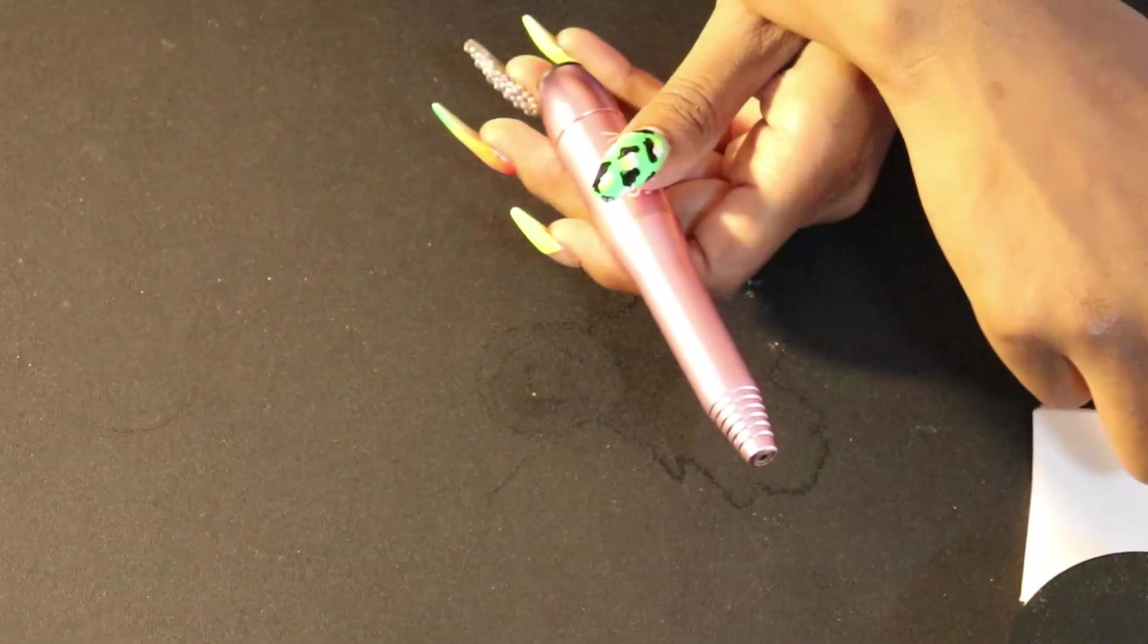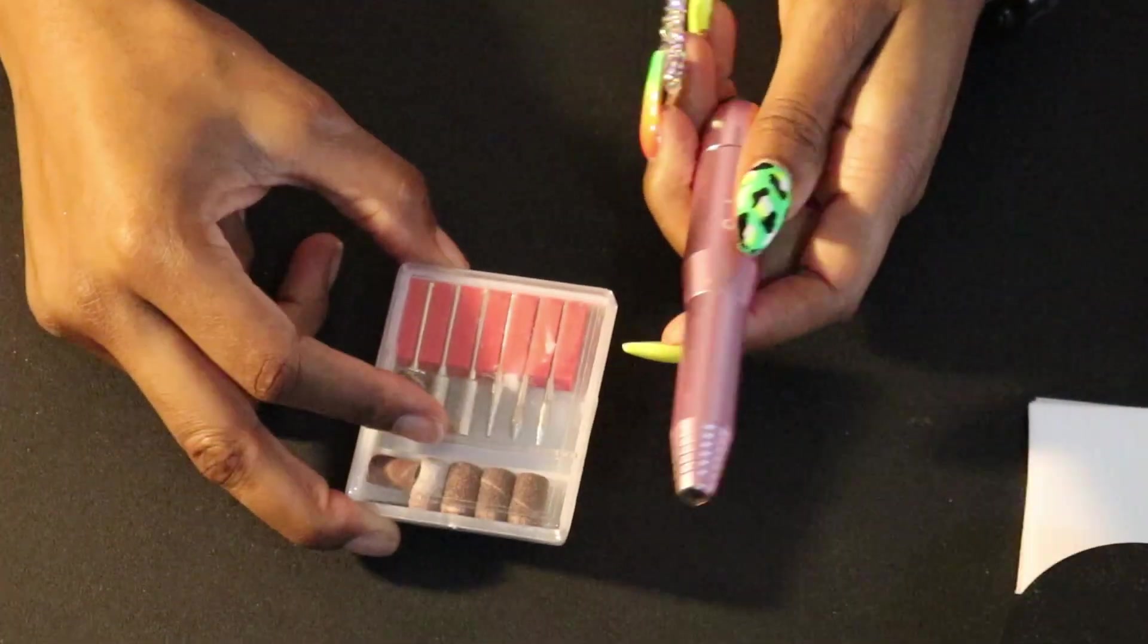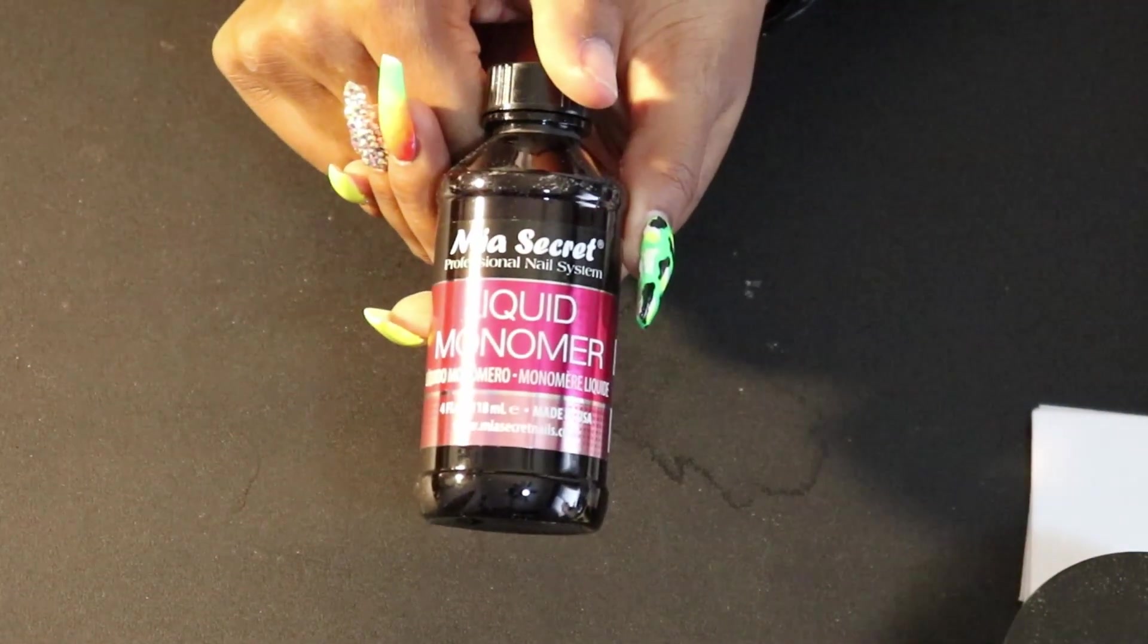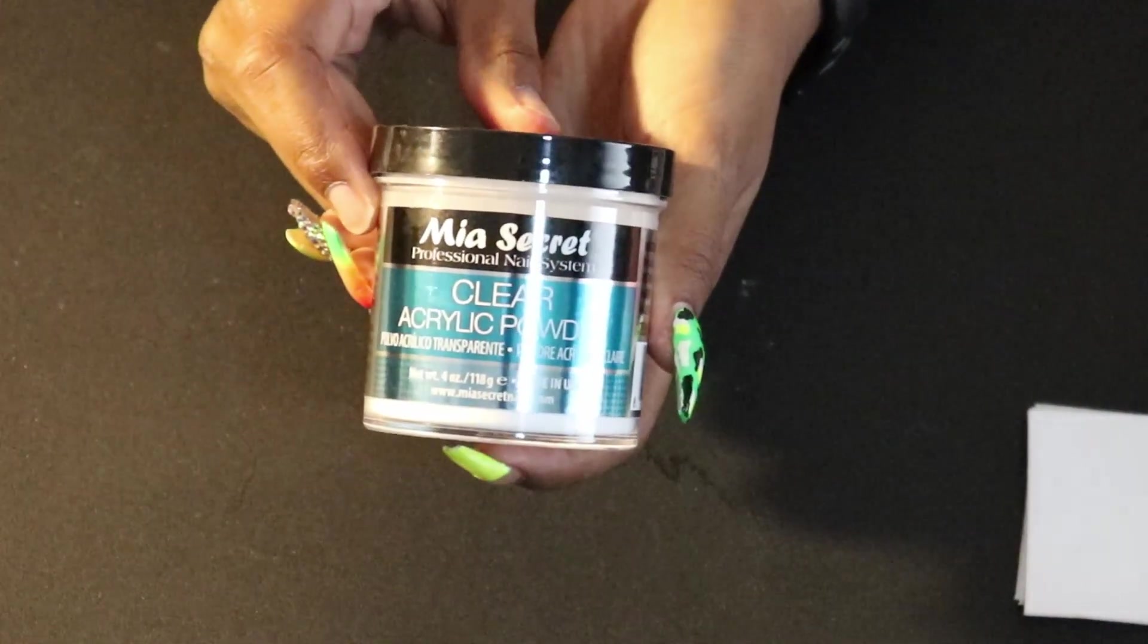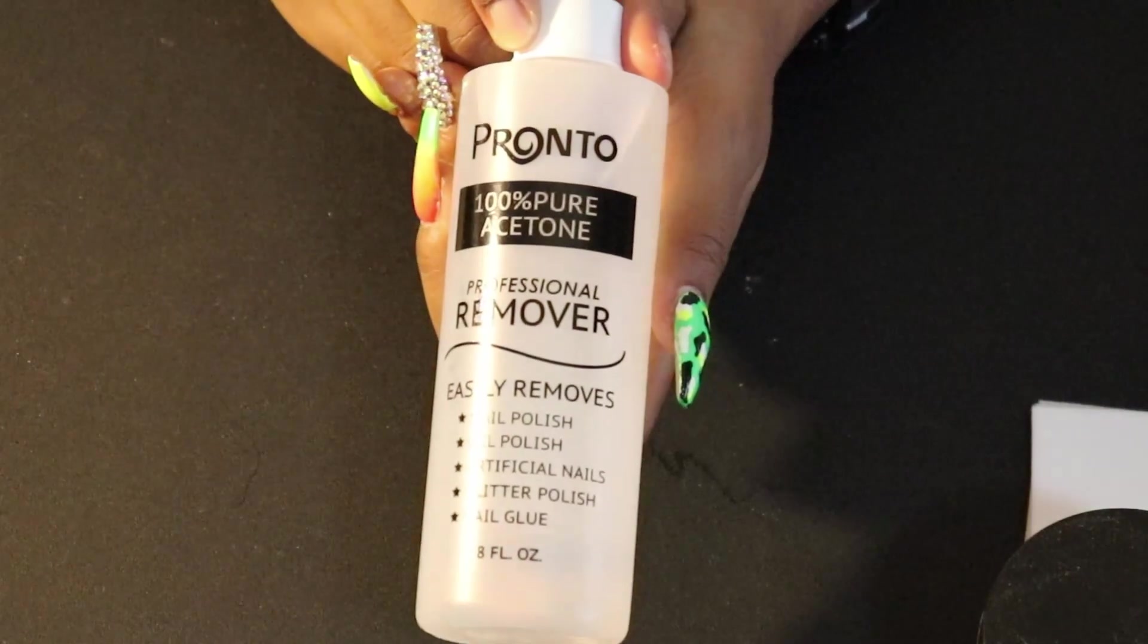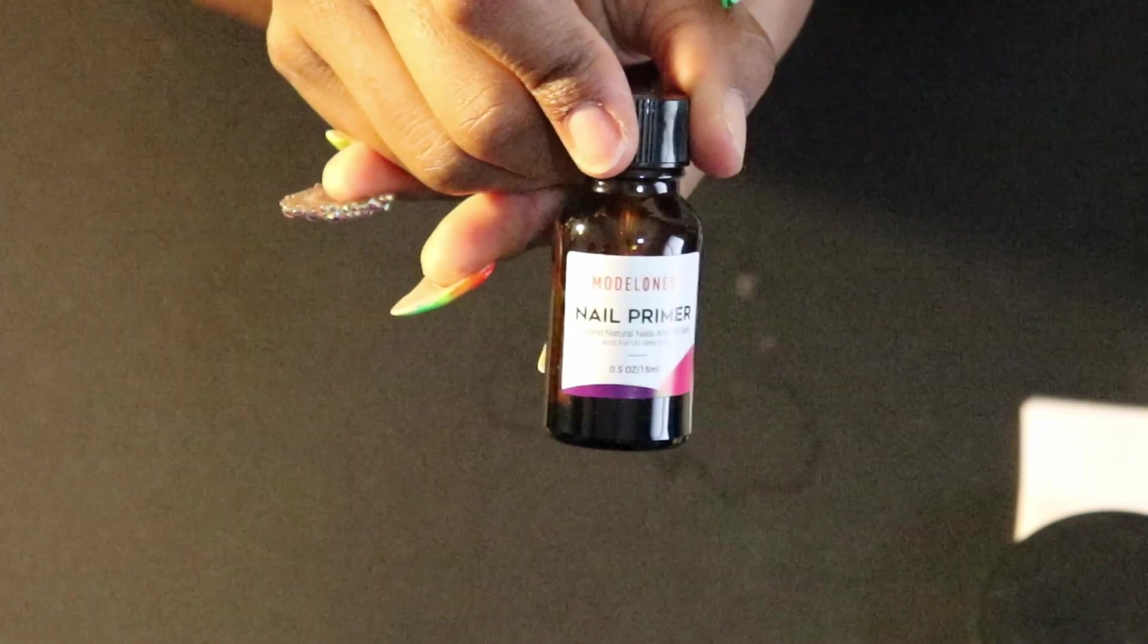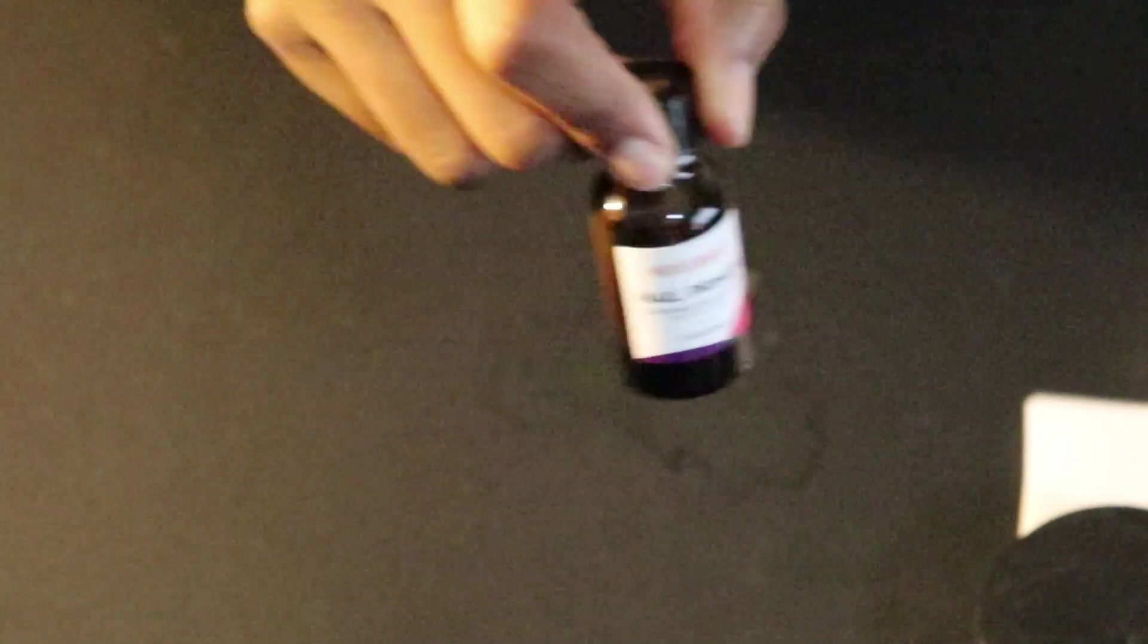I also use an electric file with several different bits because it makes filing so much easier. I'm using the Mia Secret Monomer as well as their clear acrylic powder. You're going to need 100% acetone.